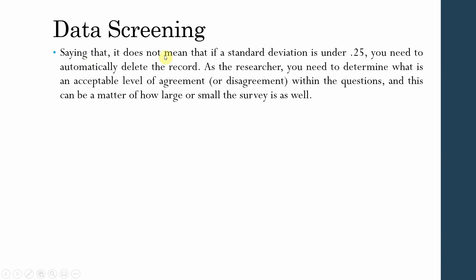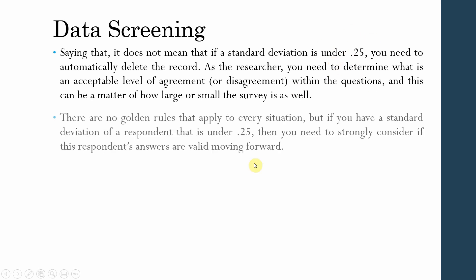It does not mean that if standard deviation is under 0.25 you need to automatically delete the record. As the researcher, you need to determine what is an acceptable level of agreement or disagreement within the questions, which can depend on how large or small the survey is. There is no golden rule for every situation, but if a respondent's standard deviation is less than 0.25 you need to strongly consider whether their answers are valid before moving forward.